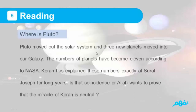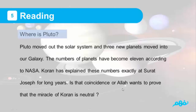Where is Pluto? Pluto moved out of the solar system and three new planets moved into our galaxy. The number of planets has become 11 according to NASA. The Quran explained these numbers exactly as Surah Yusuf for long years. Is that a coincidence or does Allah want to prove that the miracle of the Quran is real? And now we've finished the reading part.